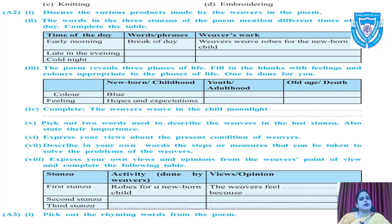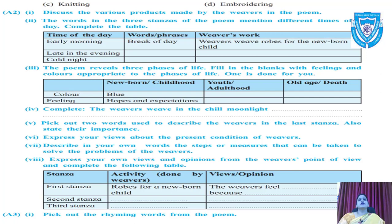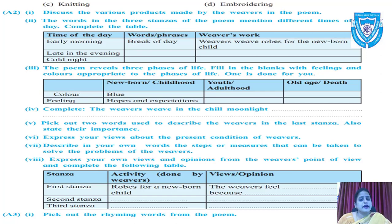The second question asks to discuss the various products made by the weavers in the poem. There are three stanzas making three different things: in the first stanza they are making a garment for a newborn child; in the second stanza they are making a veil for a queen's marriage; and in the third stanza they are making a dead man's shroud.